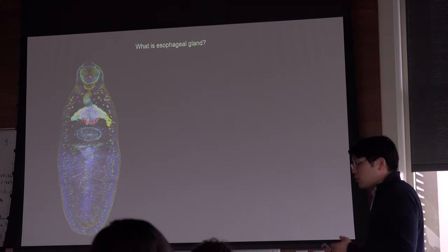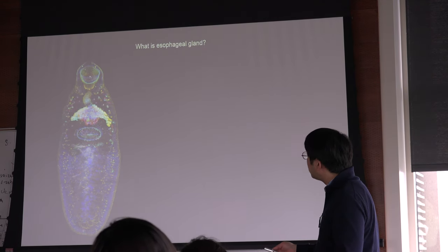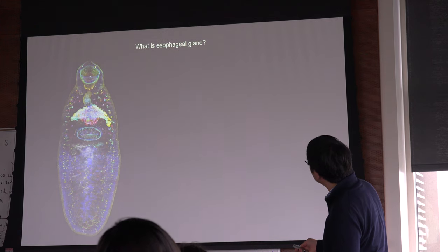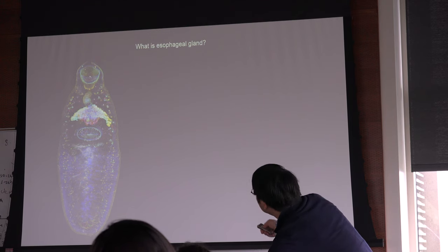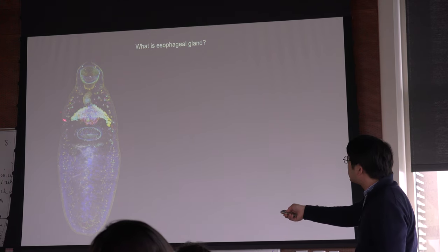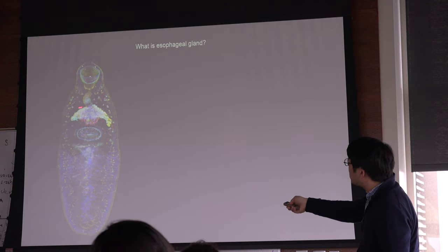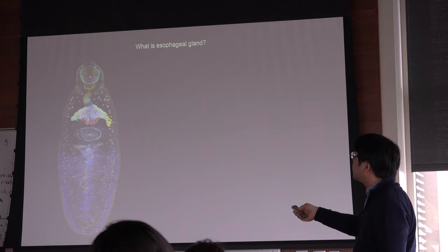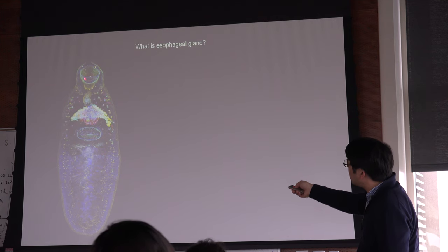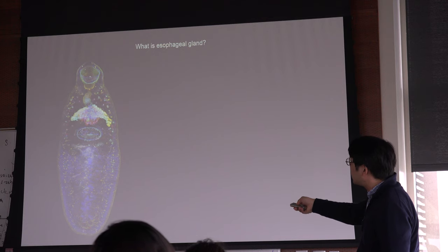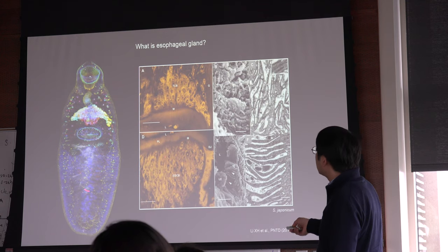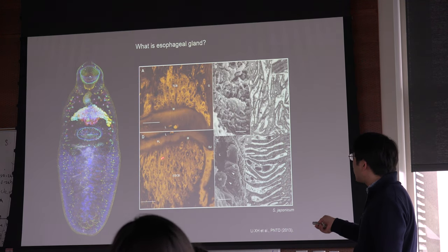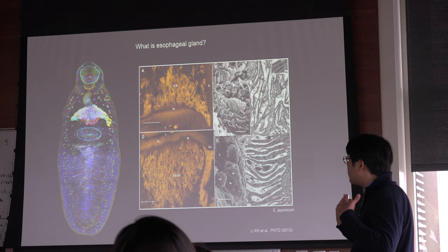What is the esophageal gland? This lectin staining highlights it here — the esophageal gland in this juvenile parasite. You're looking at the mouth and esophagus, the esophageal gland, and there are gut branches spanning from the end of the esophageal gland to the posterior end of the parasite. If you look closely you can actually see cytoplasmic cell bodies projecting material into the esophageal lumen.